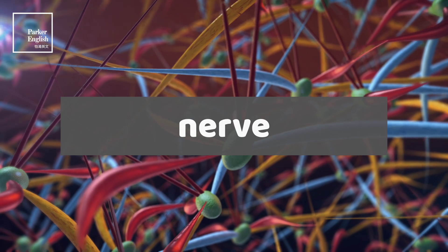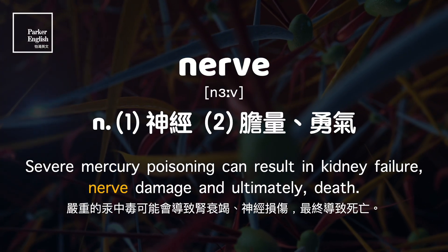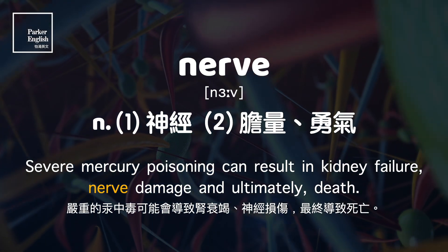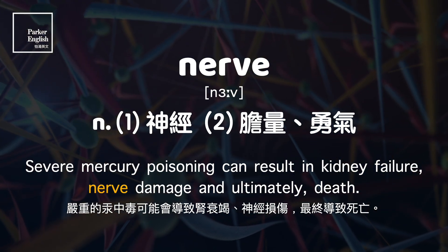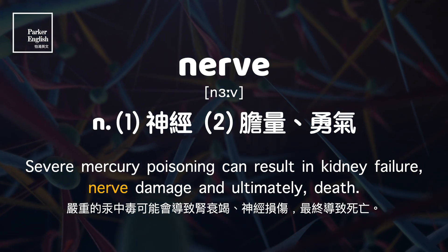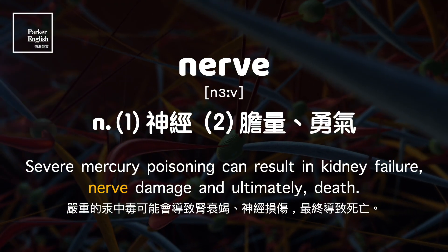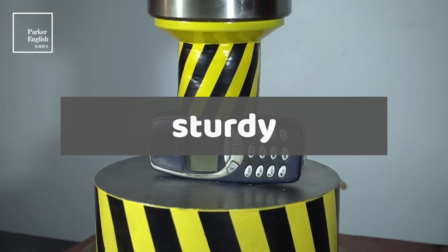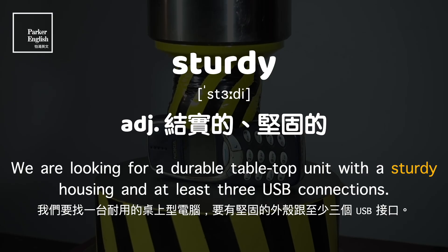Nerve. Severe mercury poisoning can result in kidney failure, nerve damage, and ultimately death.